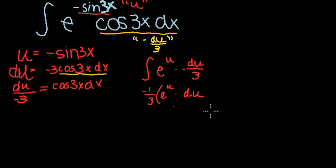So we have negative 1/3 times e to the u times du.